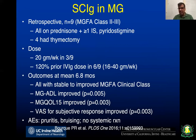In a retrospective study, nine patients with class 2 or class 3 myasthenia who were on prednisone and one immunosuppressant were tried on 20 grams per week of subcutaneous immunoglobulin. All showed improvement in myasthenia gravis activities of daily living and myasthenia gravis quality of life-15 scores. There were no major side effects except for bruising and some pruritus at the injection site.